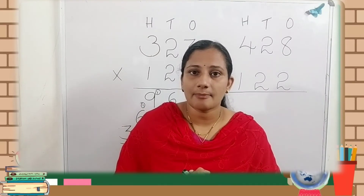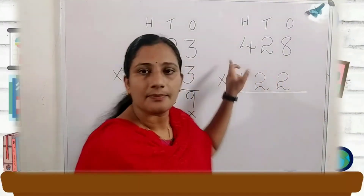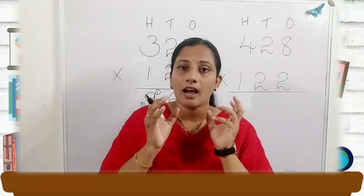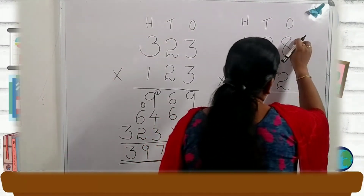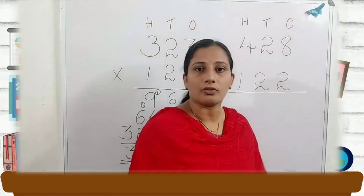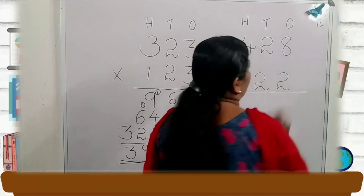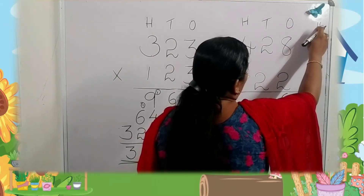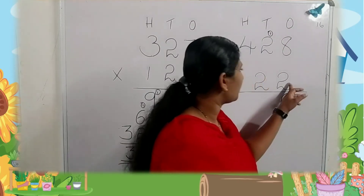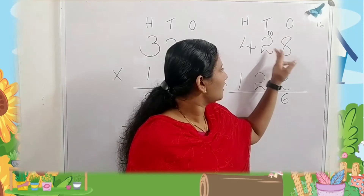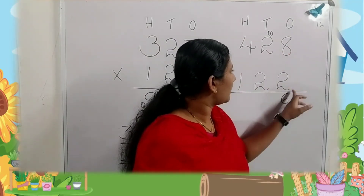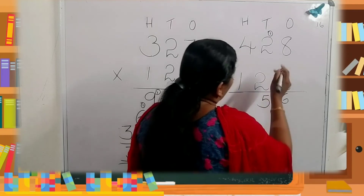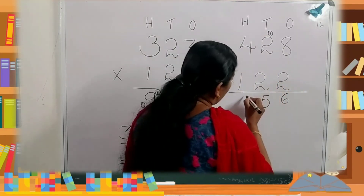What is the first step? Multiplying this two by these three digits. First, two into eight because we start from the ones place. Two multiplied by eight — eight twos are sixteen. There are two digits, so we write six here, and carry the one to the tens place. Next, multiply this two by two — two twos are four, plus one carry over, equals five. Next, two into four is eight.